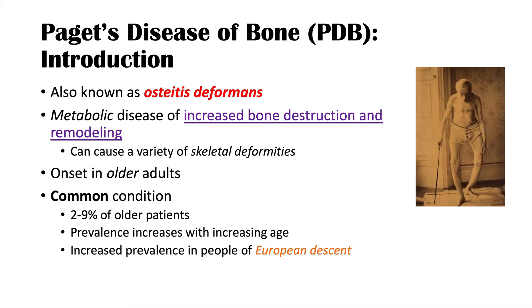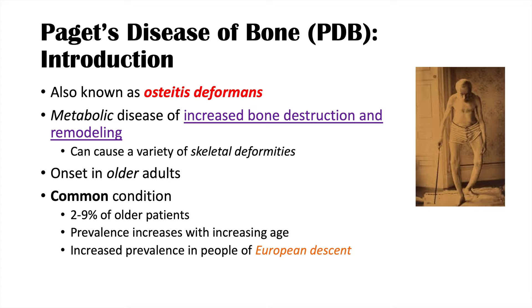Paget's disease of bone is only second to osteoporosis, and the prevalence of this condition increases with increasing age. It has an increased prevalence in people of European descent. And this seems to be an ancient condition — there are skeletons of Neanderthals that show characteristic signs of Paget's disease of bone.